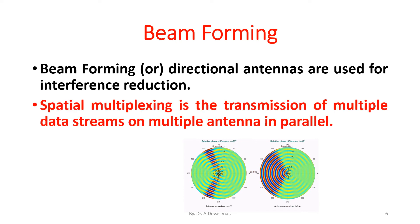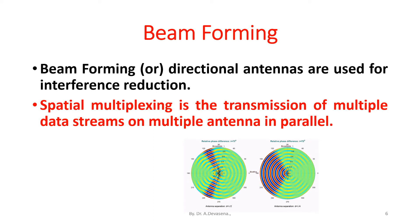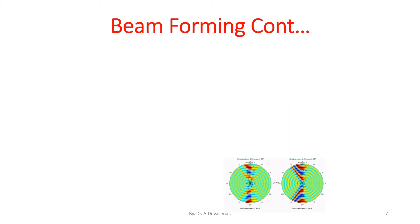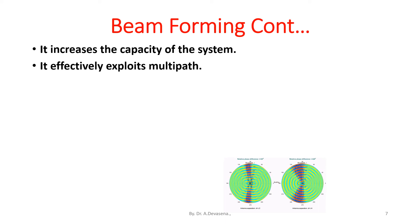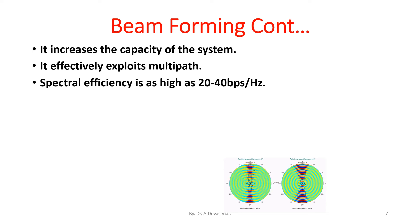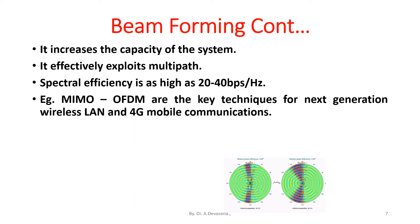Spatial multiplexing is the transmission of multiple data streams on multiple antennas in parallel. Beam forming increases the capacity of the system and it effectively exploits multipath. Spectral efficiency is as high as 20 to 40 bits per second per hertz.